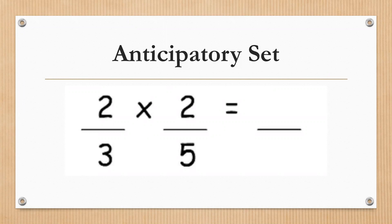This is something that you have worked on last week. When you're multiplying fractions, you multiply across: 2 times 2 equals 4, 3 times 5 equals 15.